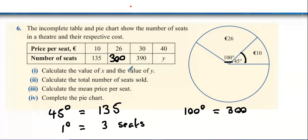I need to calculate what 360 degrees is. 360 degrees would be how many people? Multiply it by 3. You get a thousand and eighty.